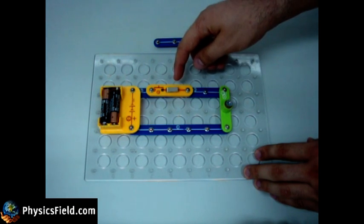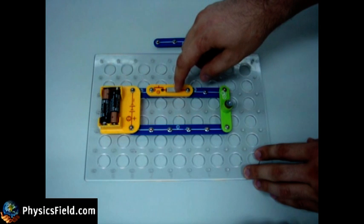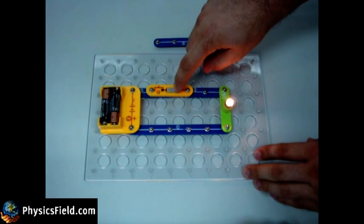When the switch is open, it will be an open circuit. But if we close the circuit, there will be a complete path for charges to flow around the circuit. And it will be a closed circuit.